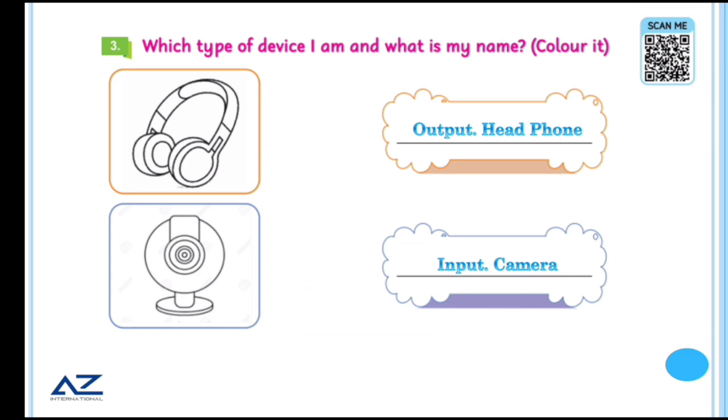Which type of device I am and what is my name? The first device is headphone. Headphone is basically output device because it is output device.